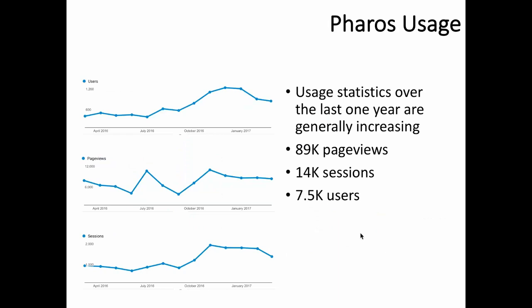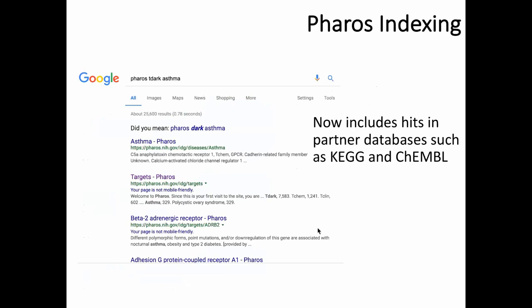Over the last year, we've seen generally increasing usage in terms of users, page views, and sessions — just under 90,000 page views. All target pages have been submitted to Google for indexing, and while searching for 'asthma' may not put Pharos at the top, prefixing anything with 'Pharos' usually takes you to the relevant page. Partner databases like KEGG and ChEMBL also link back to Pharos.